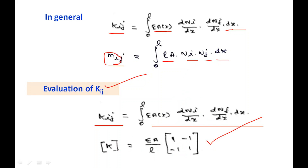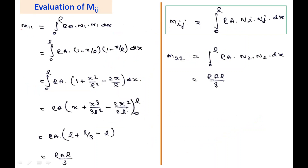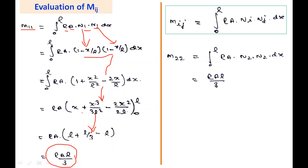The stiffness matrix evaluation was already discussed for the bar problem in an earlier part, giving K = (EA/l)·[1, −1; −1, 1]. For the mass matrix, M11 = integral from 0 to L of ρA·N1·N1 dx. Substituting N1 = 1 − x/l and integrating, we get M11 = ρAl/3. Similarly, M22 = integral of ρA·N2·N2 dx = ρAl/3.